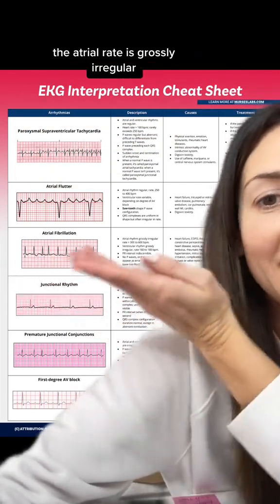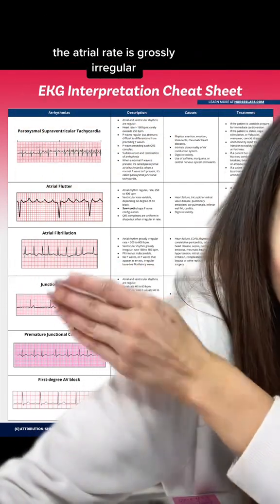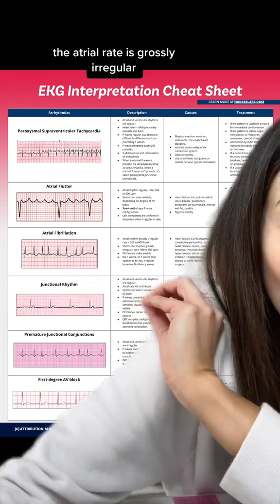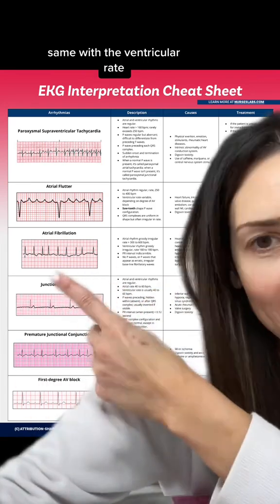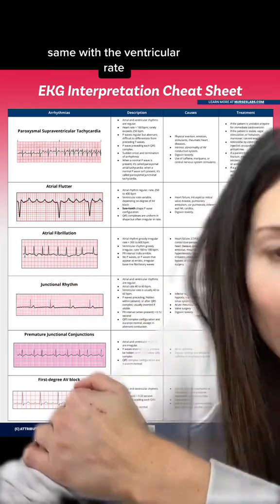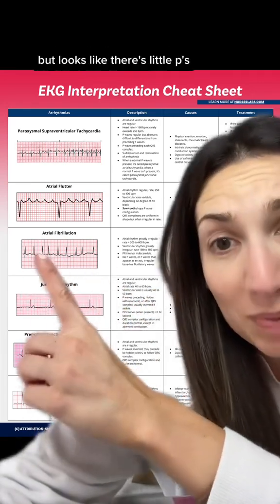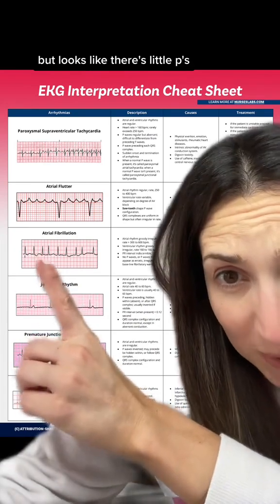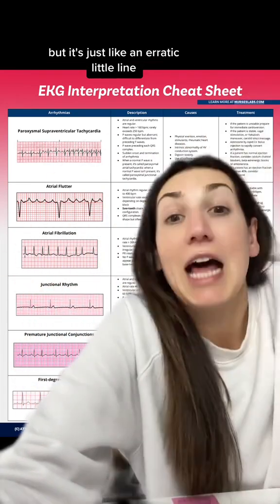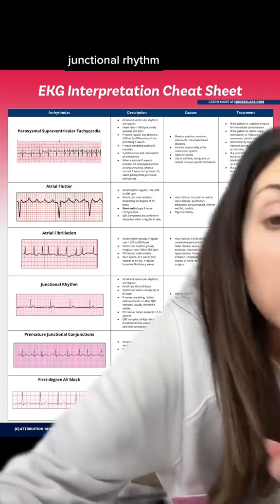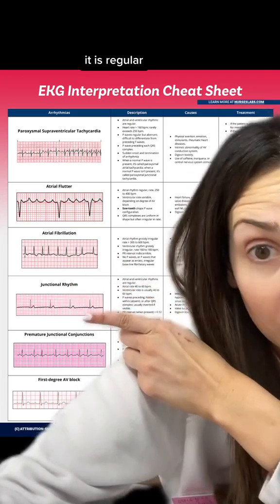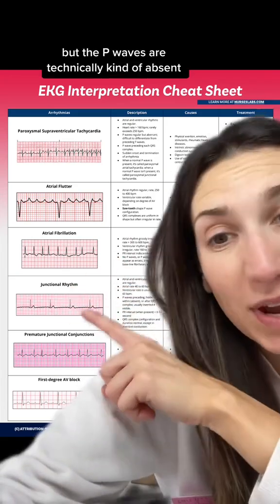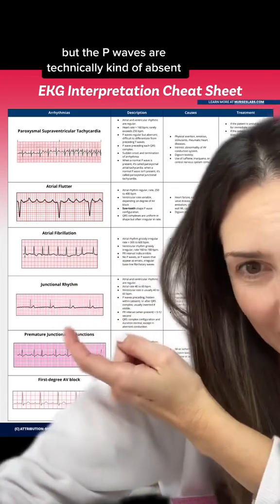A-fib — the atrial rate is grossly irregular, same with the ventricular rate. There are no true P waves, but there appears to be an erratic little line.